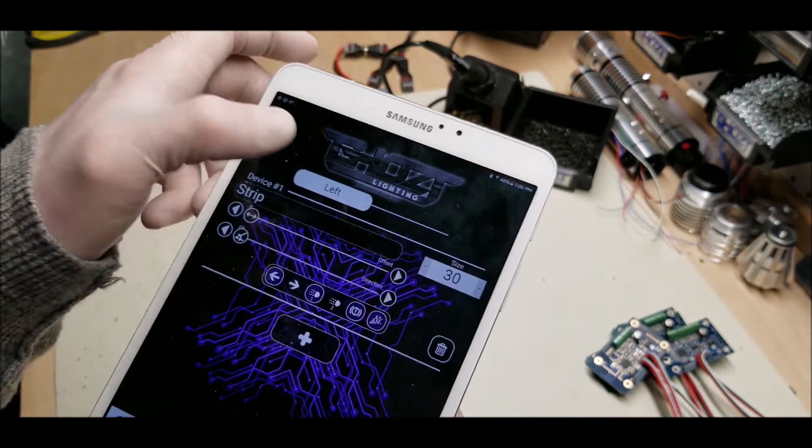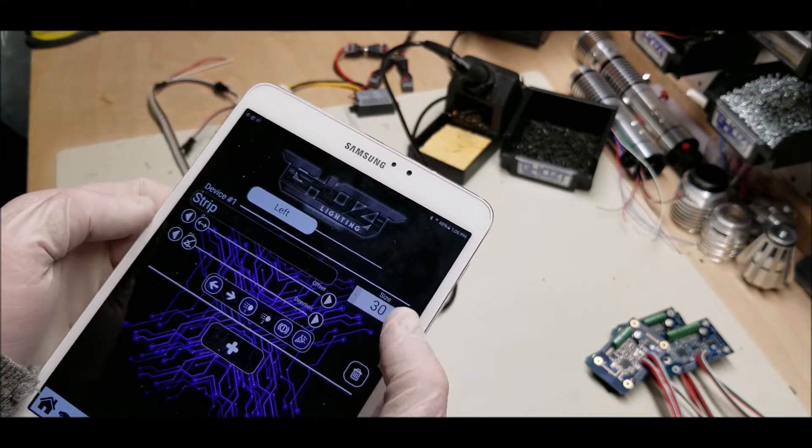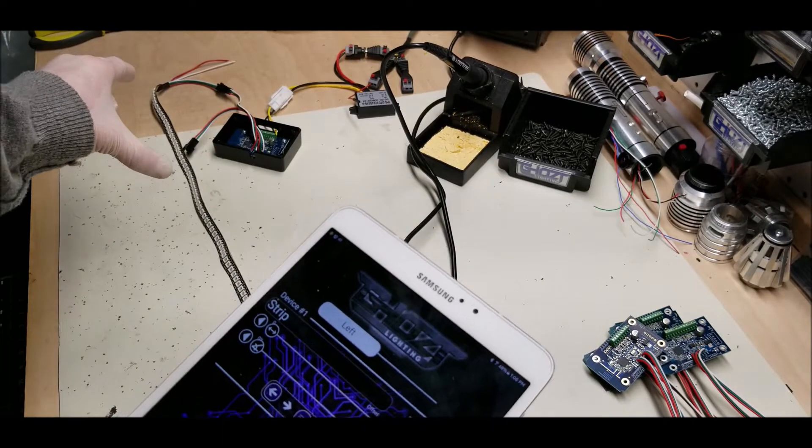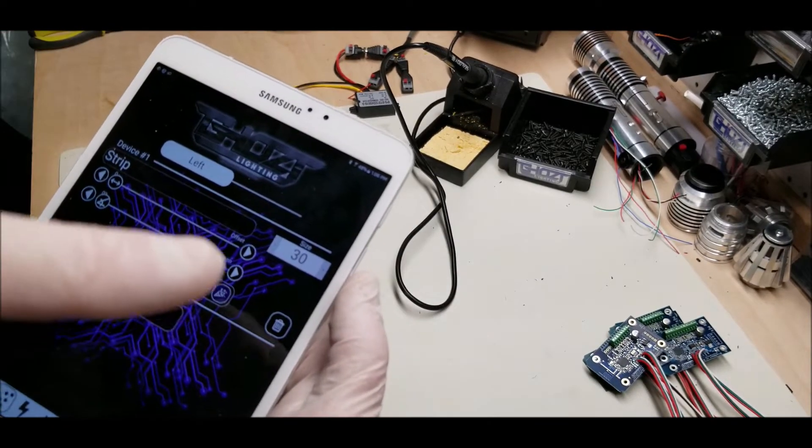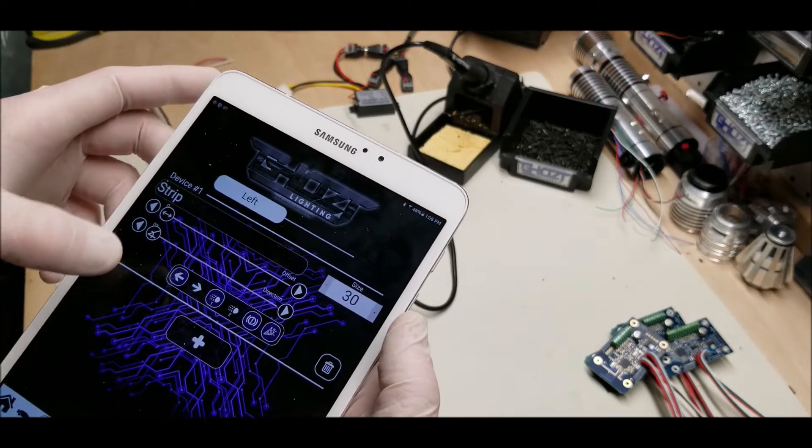The way this works is I'm going to add a strip here. You can set the size. Now what this does is it breaks this LED strip into a 30 LED size.